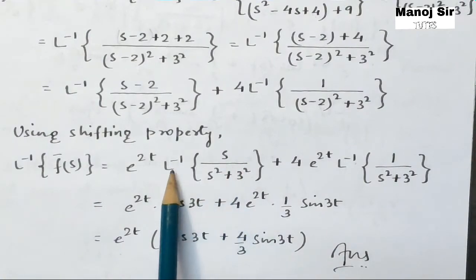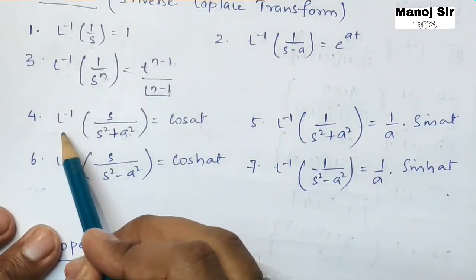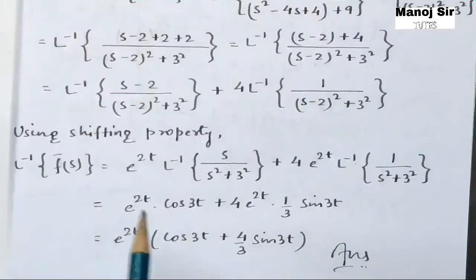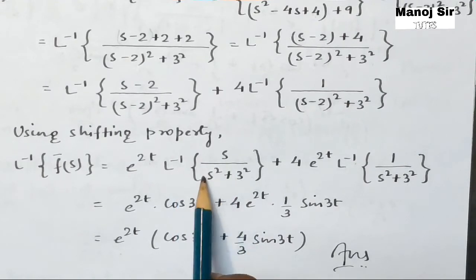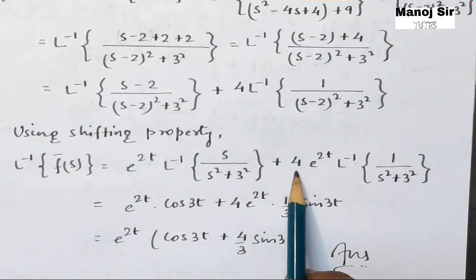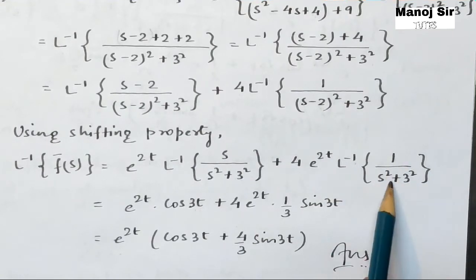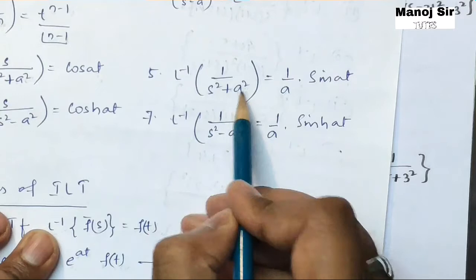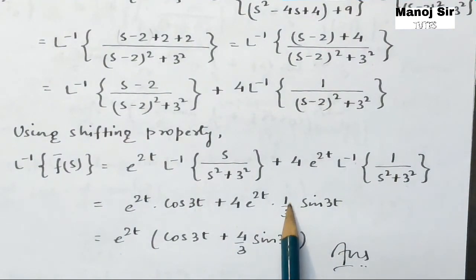For the inverse Laplace transform of s upon (s² + 3²), we use formula number 4: the inverse Laplace transform of s upon (s² + a²) equals cos(at), and here a = 3, so this gives cos(3t). For the inverse Laplace transform of 1 upon (s² + 3²), we use formula number 5: the inverse Laplace transform of 1 upon (s² + a²) equals (1/a) sin(at), and with a = 3, this gives (1/3) sin(3t).